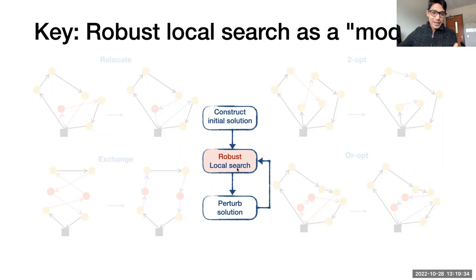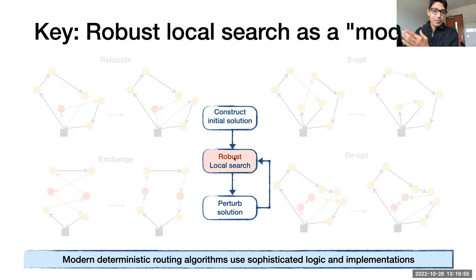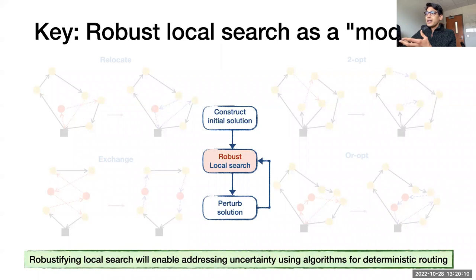Our key idea is: can we take this local search module and robustify it? Many modern deterministic routing algorithms use sophisticated logic — often thousands of lines of code. In our opinion, building a new meta-heuristic from scratch to solve a robust vehicle routing problem is overkill. Instead, we want to make very small changes to an existing code base. By swapping out the local search module with a new robust local search module, we can essentially address uncertainty using algorithms built for deterministic routing. That's the key idea.